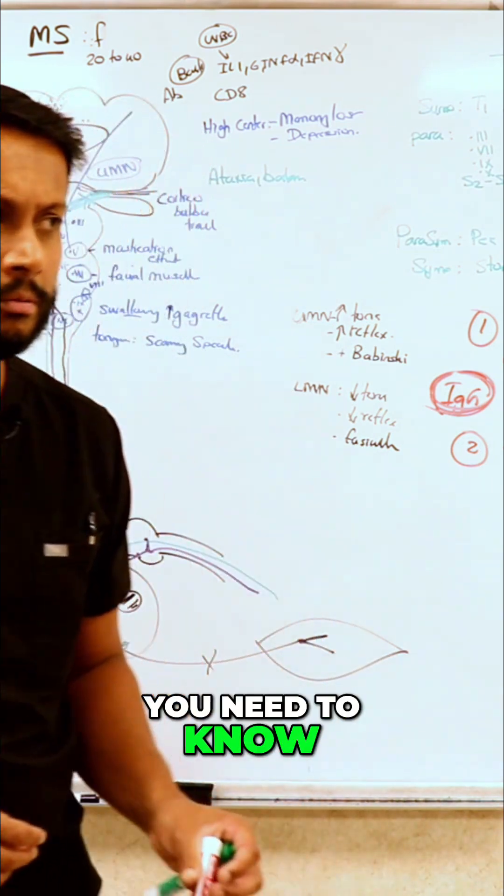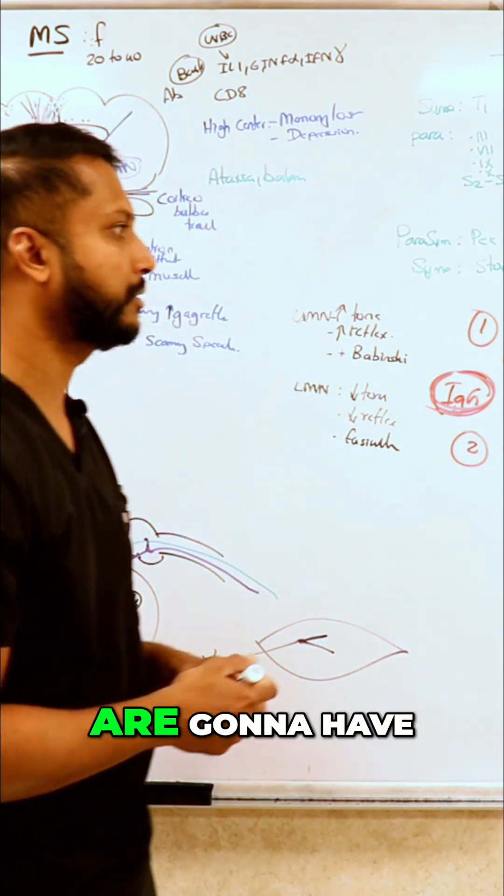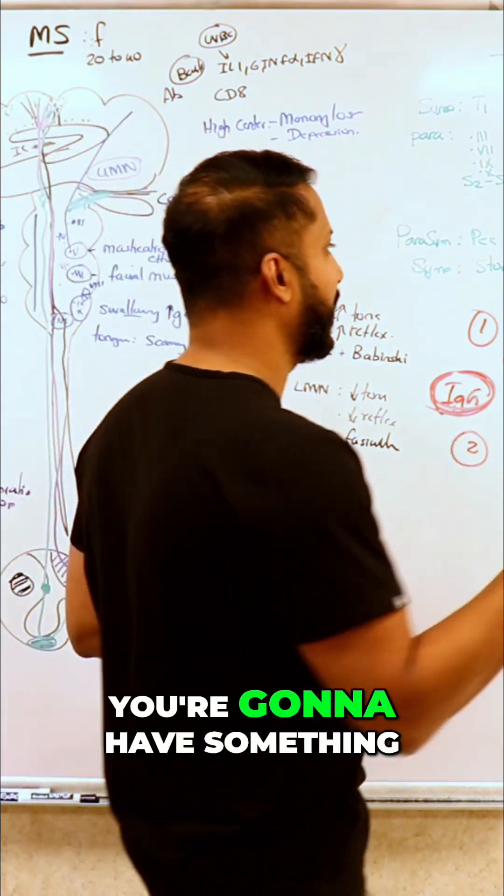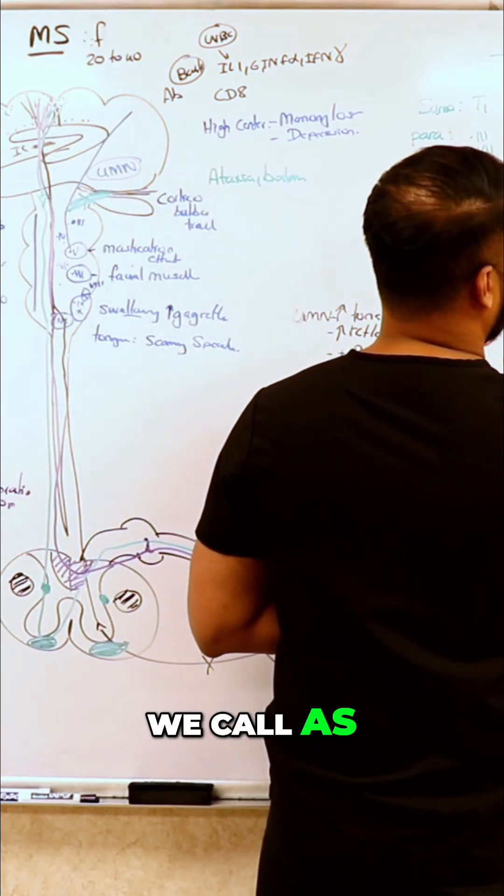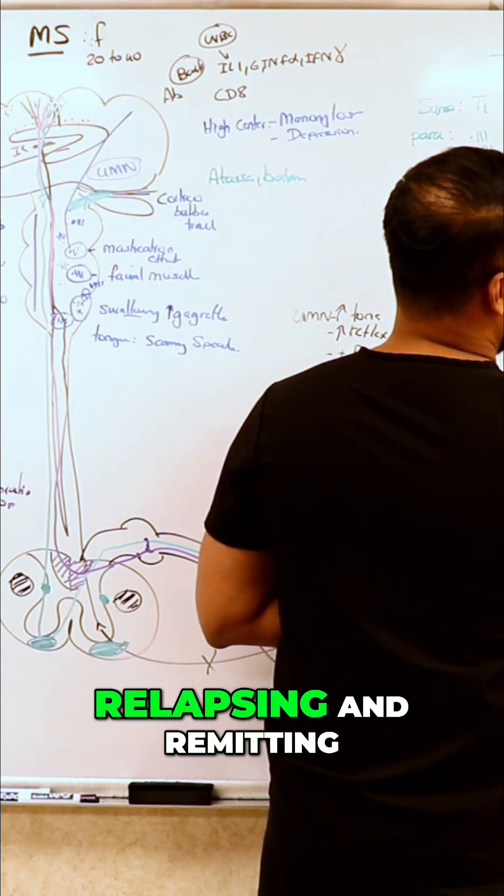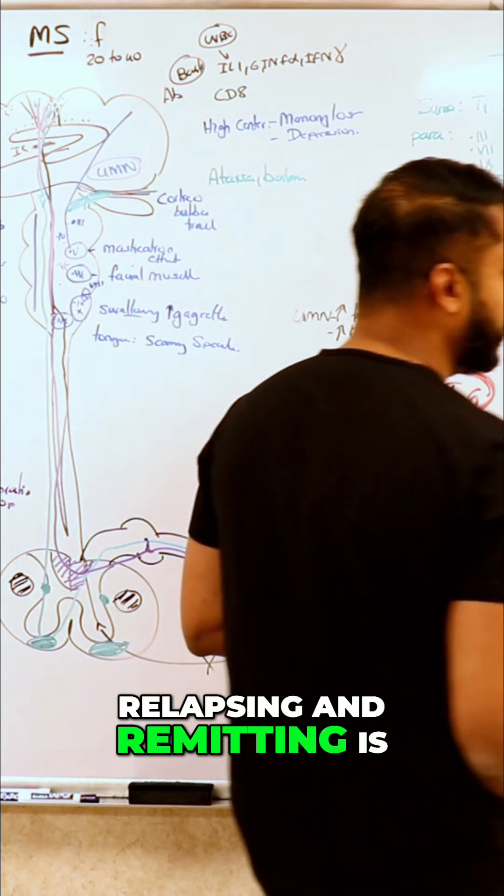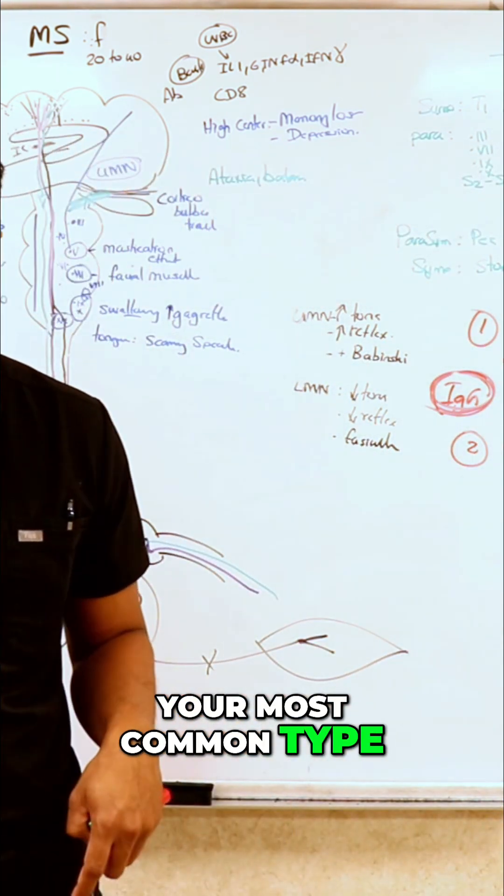There's three important types you need to know. Your classic MS patients are going to have time and space, right? So you're going to have something we call relapsing and remitting. So if you look at it, relapsing and remitting is your most common type.